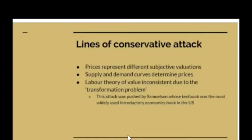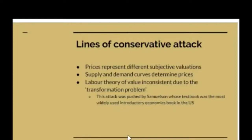Let's look at some of the lines of attack that conservative economists have used. On the one hand, they've said that prices, in the end, represent subjective valuations of commodities. On the other hand, when they present a more elaborate theory, they say that where you get a price it's where you get the intersection between what are termed a supply and a demand curve. In another publication, I go into some detail as to why this doesn't constitute a scientific theory. Basically, it's a matter of Occam's Razor, which says you shouldn't multiply entities beyond causes.